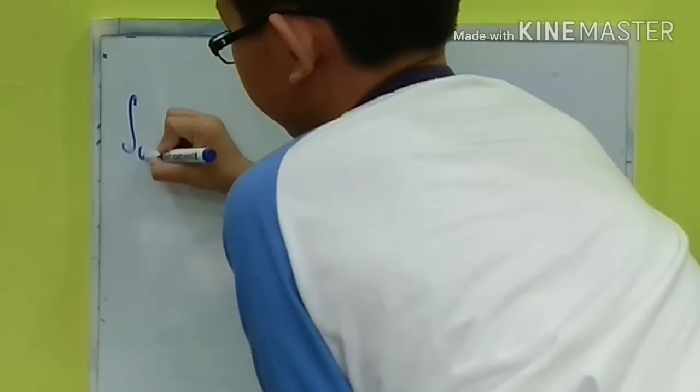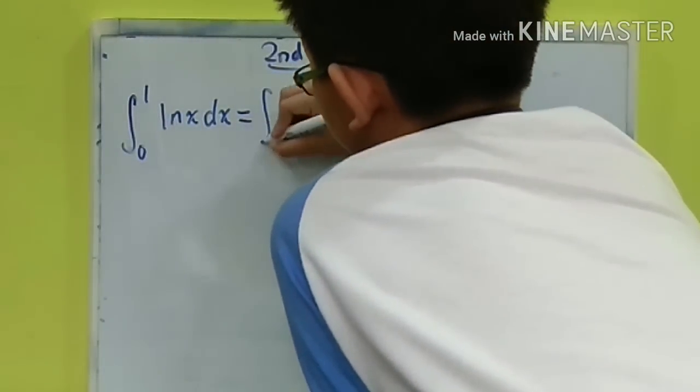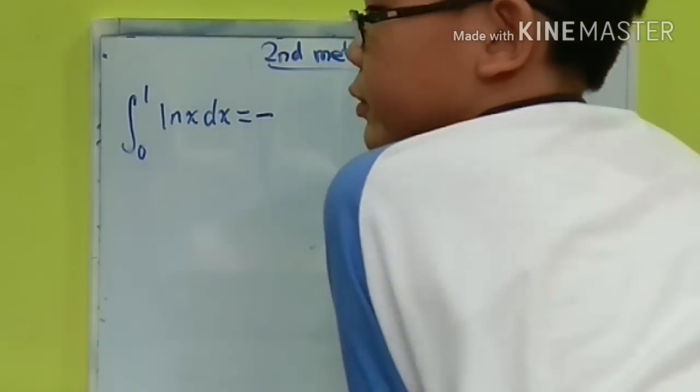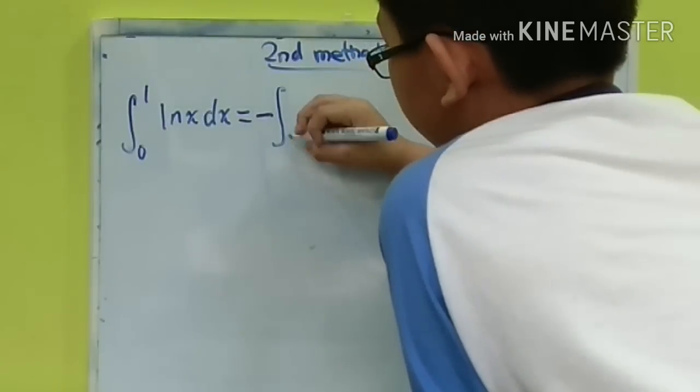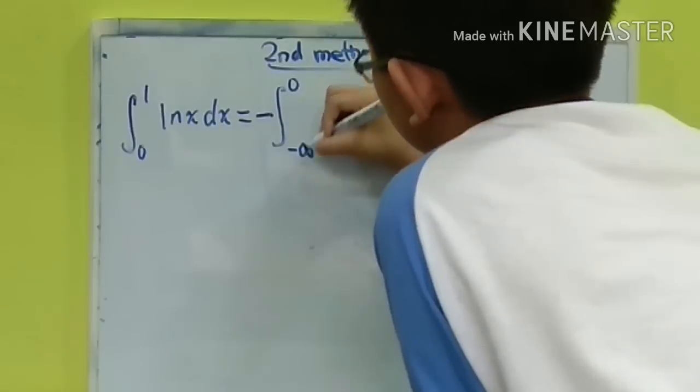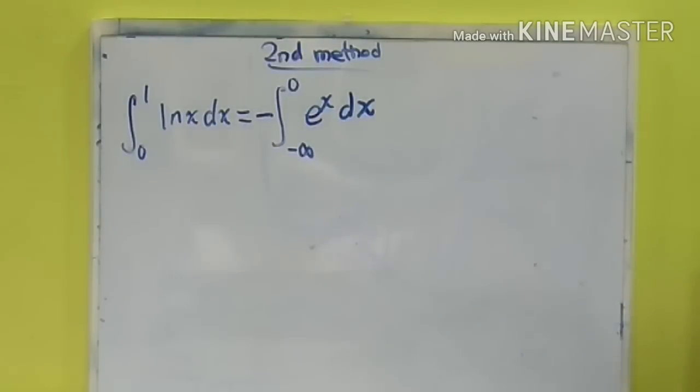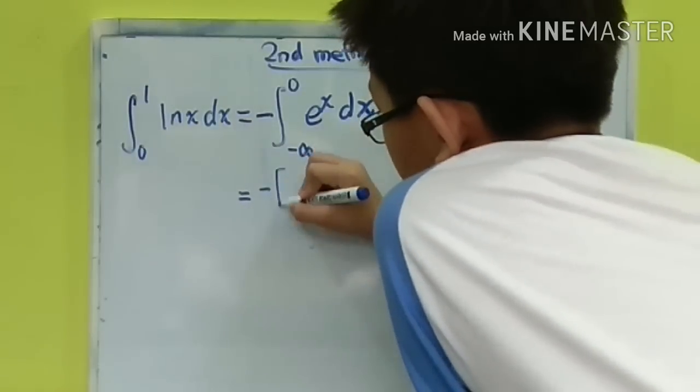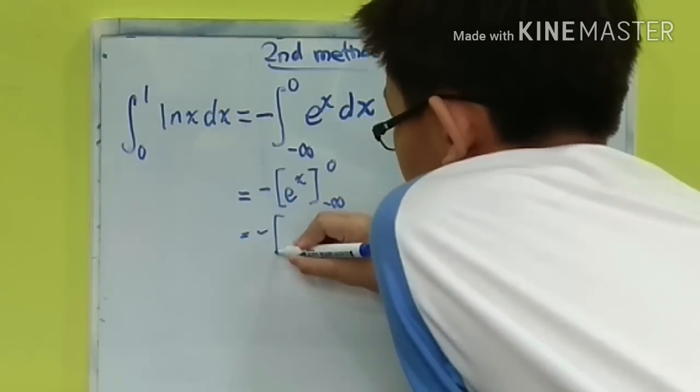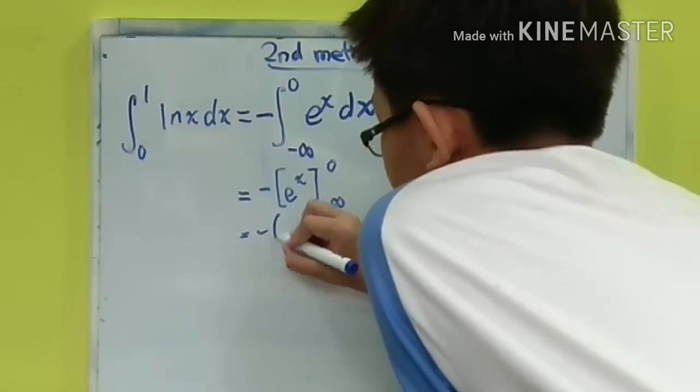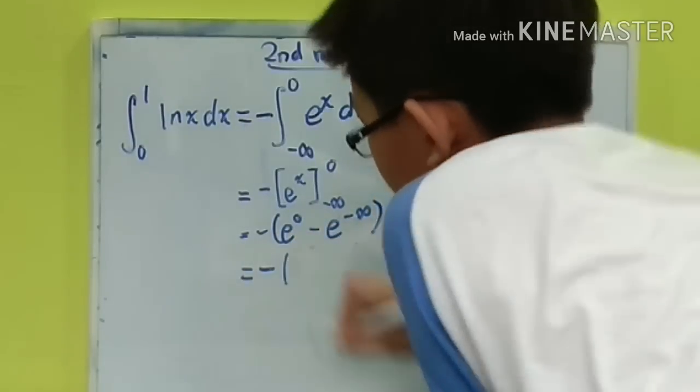This integral, the integral from 0 to 1 of the natural log of x with respect to x, is equal to the negative of the integral from negative infinity to 0 of the inverse, which is e^x with respect to x. This is easy. All we have to do now is evaluate the integral e^x along the limits of integration, and therefore you get your answer as -1.